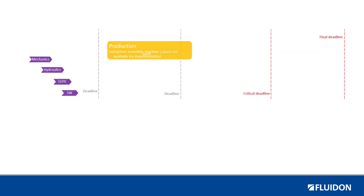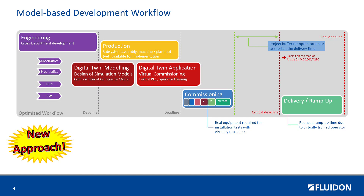In contrast to the traditional development process, the model-based development process works across domains, meaning the requirements are determined model- or system-based and no longer for each domain individually. As a result, the various technical domains such as mechanics, hydraulics, electrics, electronics, and software are married to one another at an early stage and go through the engineering in parallel and in close coordination.